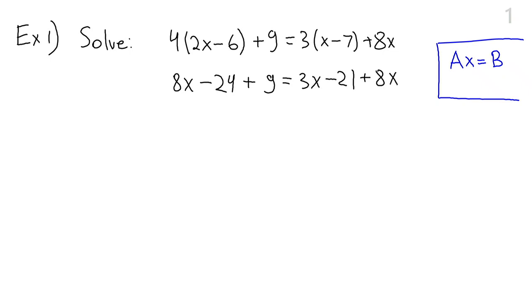Now there's a lot of terms here and we can start putting x's on one side and numbers on the other side. Or we can first collect like terms on both sides. On the left hand side we have 8x minus 15. On this side we combine the x terms and we get 11x minus 21. Now I'm going to subtract 8x from both sides and I'm going to get negative 15 equals 3x minus 21. And I'm going to add 21 to both sides and I'm going to get 6 equals 3x.